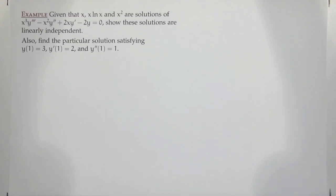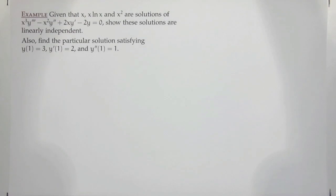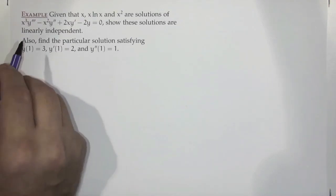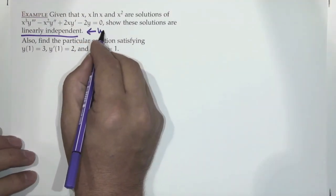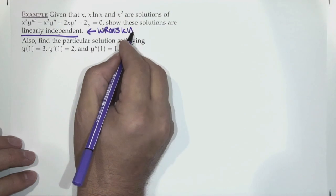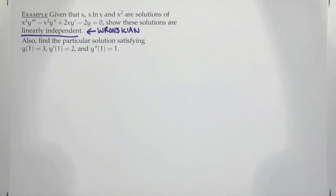To show linear independence, we use the Wronskian — that's our go-to linear independence checking tool. So we compute the Wronskian of the three functions x, x ln x, and x².